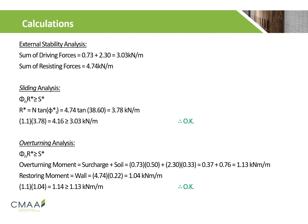We can now use the calculated values to determine whether or not our wall is stable. Overall, we get a driving force of 3.03 kN per meter and a resisting force of 4.74 kN per meter. From this, we obtain a factored resisting force of 4.16 kN per meter due to friction, which is greater than our driving force of 3.03 kN per meter, satisfying the design principles for sliding.